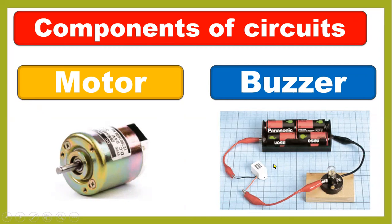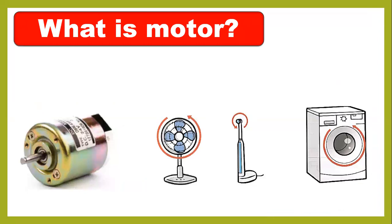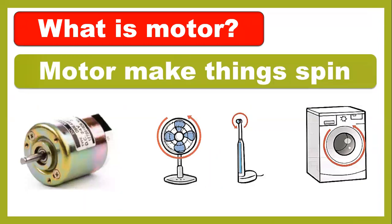Here are three examples of a motor making things spin: a fan, a camera that can move in different angles, and a washing machine that makes things spin.